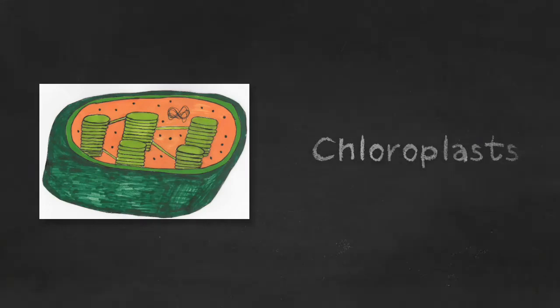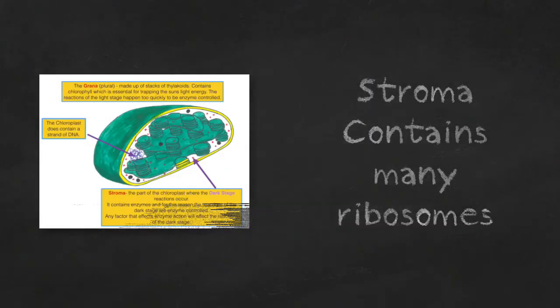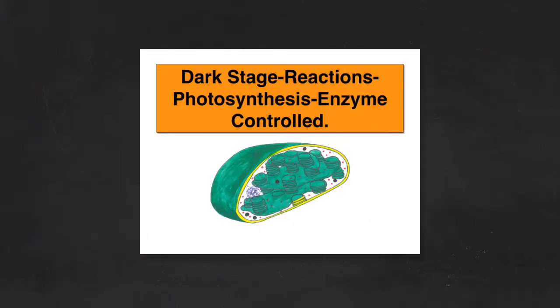So now let's discuss the chloroplast, those organelles found in plant cells. The liquid part of the chloroplast is known as the stroma and it contains many ribosomes. And we remember that the dark stage reactions of photosynthesis take place within the stroma of the chloroplast and it is the dark stage reactions of photosynthesis that are enzyme controlled.